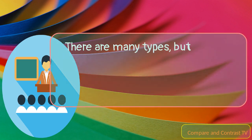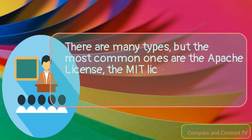There are many types, but the most common ones are the Apache License, the MIT License, and the GNU General Public License, GPL.